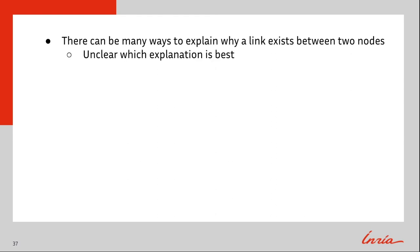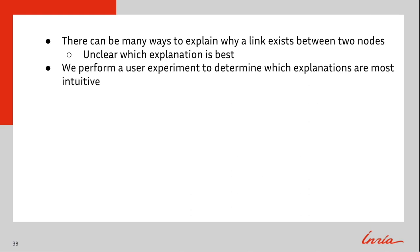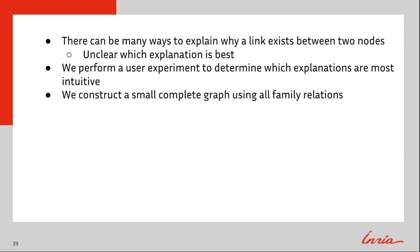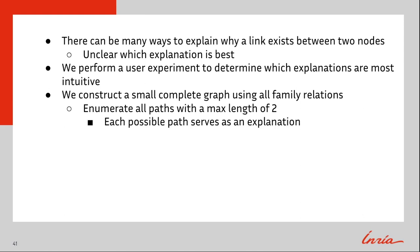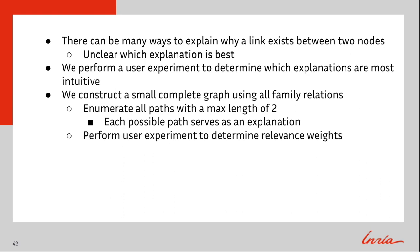There can be many ways to explain why a triple is a fact, and it is unclear which of these explanations is best. In order to build a dataset with every possible explanation, we perform a user experiment to determine which explanations are most intuitive. To do this, we construct a small complete graph using all family relations — brothers, sisters, grandparents, etc. — and enumerate all paths with a maximum length of two. Each of these paths serves as a possible explanation, and due to the small size of the graph, each path can be manually verified.